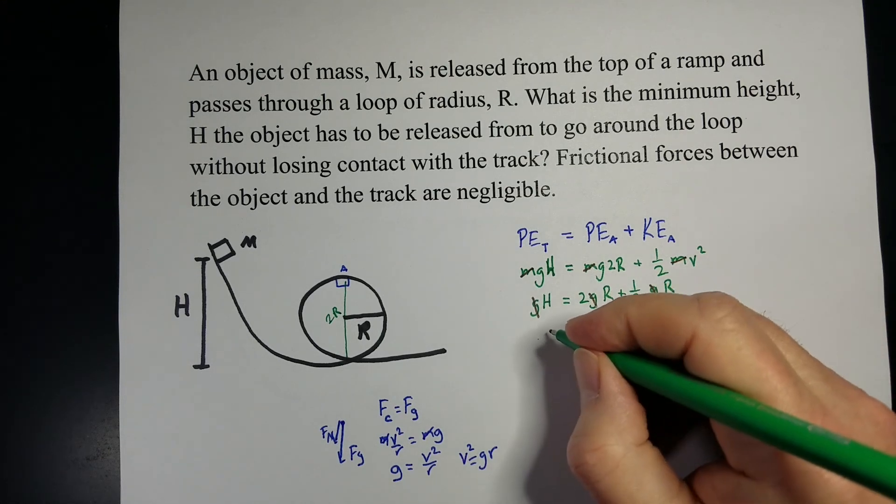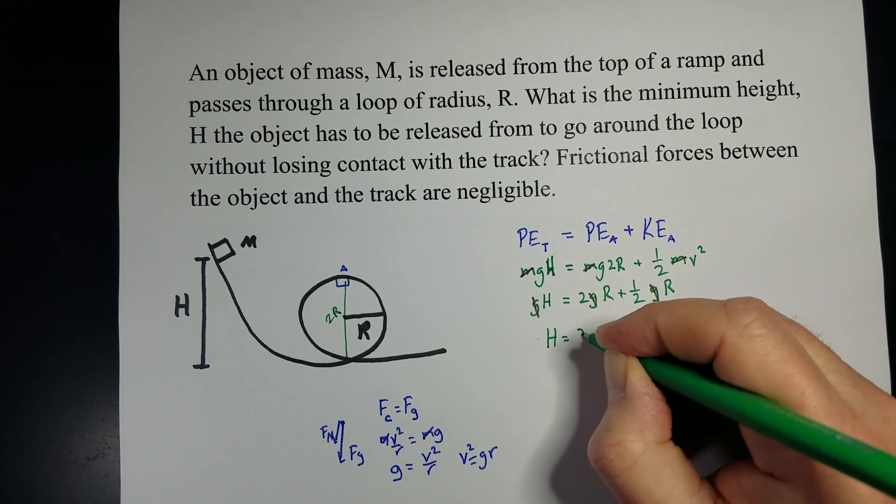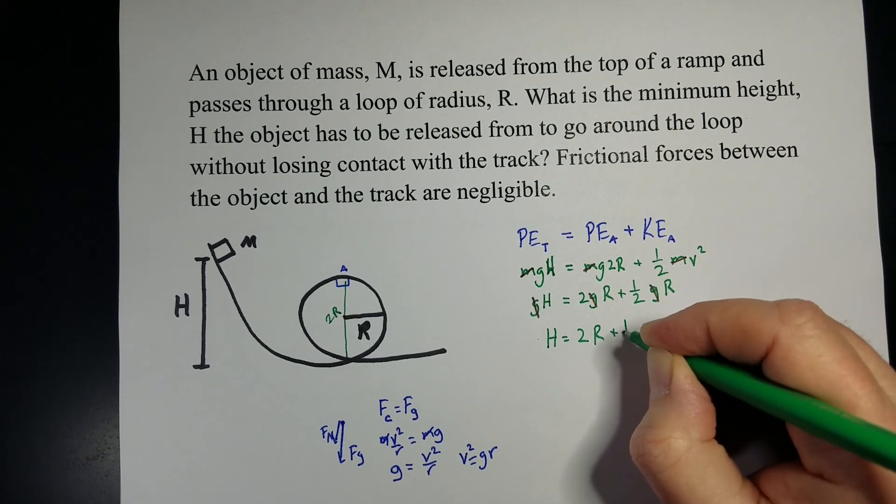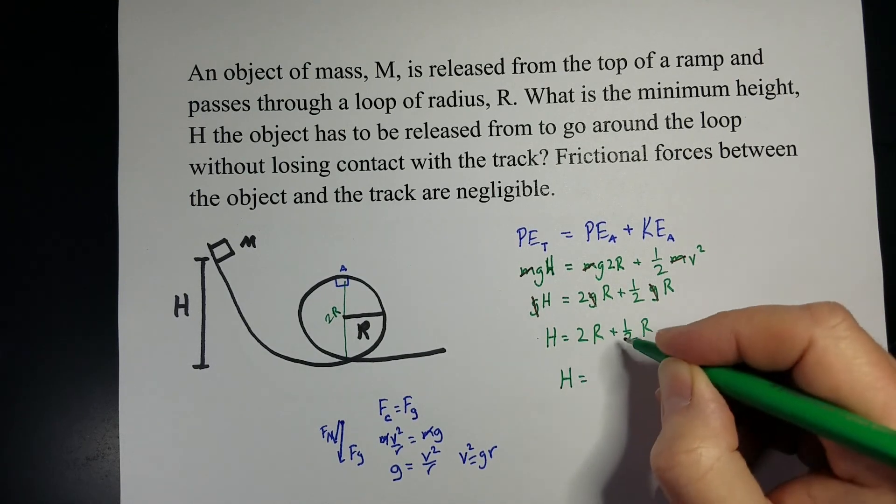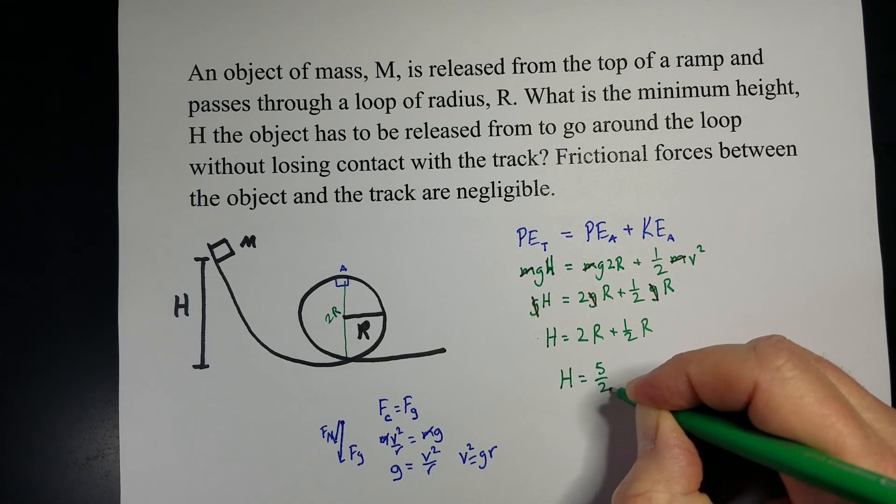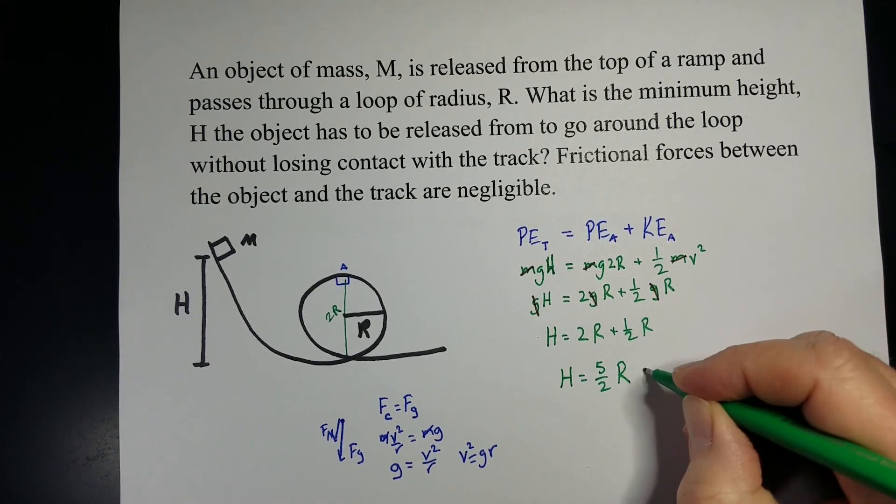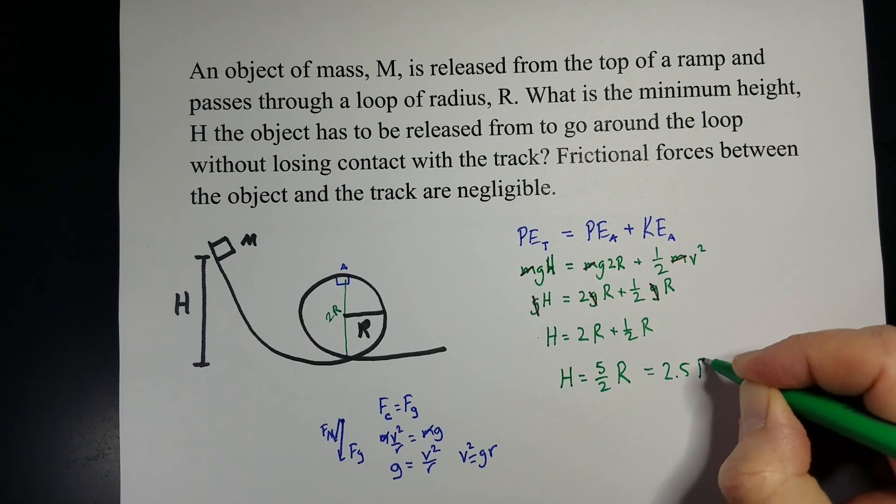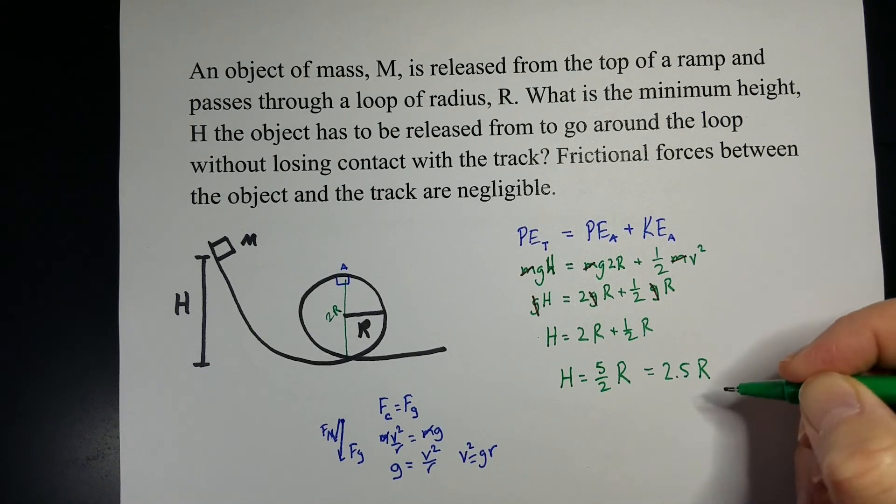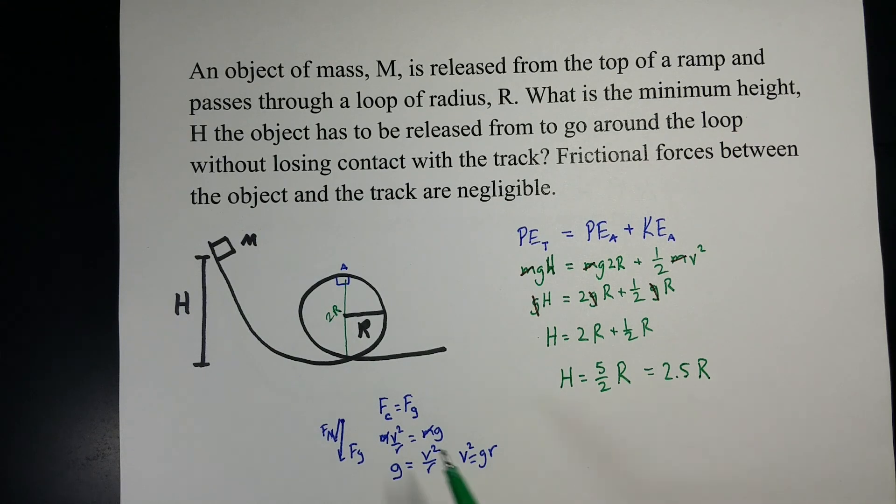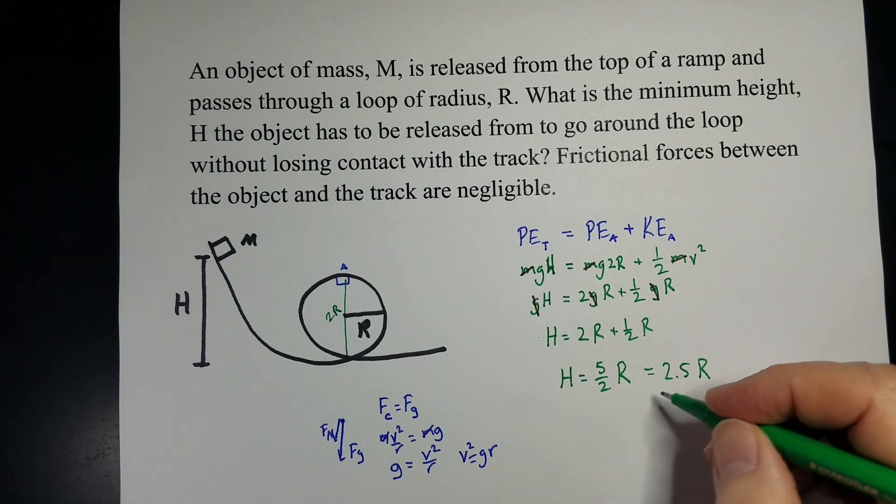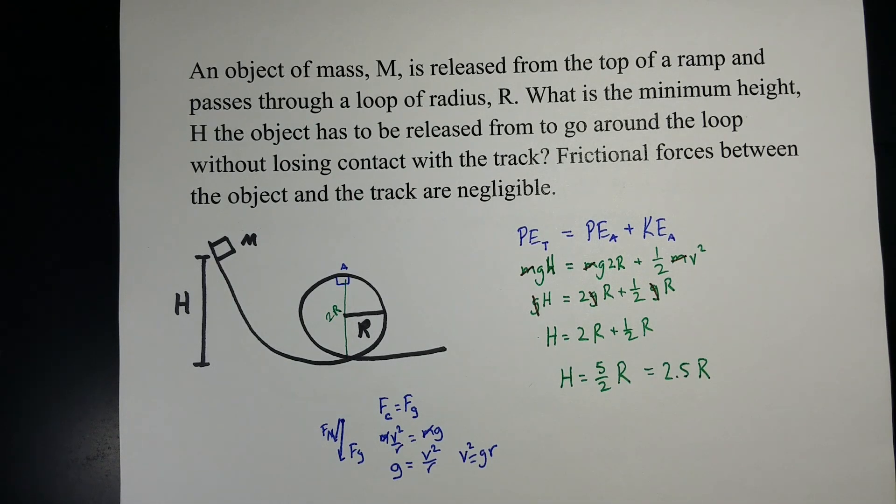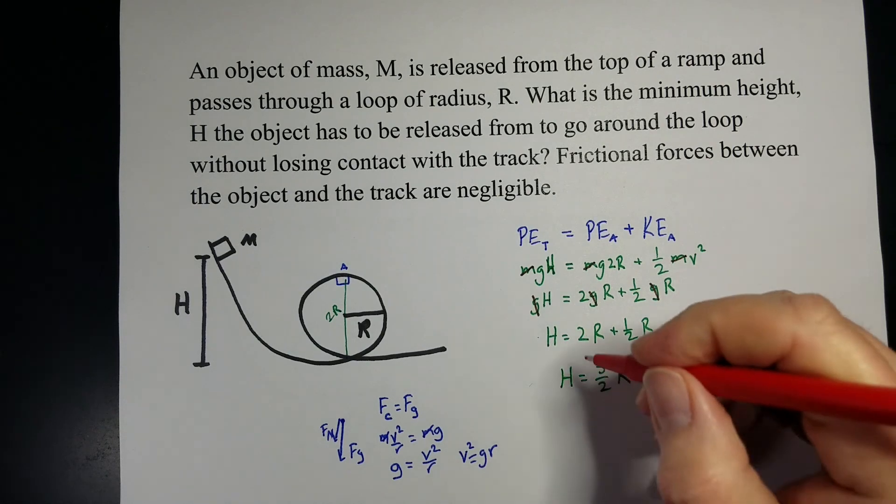And we're just left with the height is equal to 2r, plus 1 half r, so the height we have to drop it from, I'm going to go ahead and put it in fractional form. 5 halves r, which is the same thing as 2.5r, the fraction part looks cooler. So we have to drop this from 2.5 times the radius of this loop for it to make it all the way through. Now that's solving it algebraically.